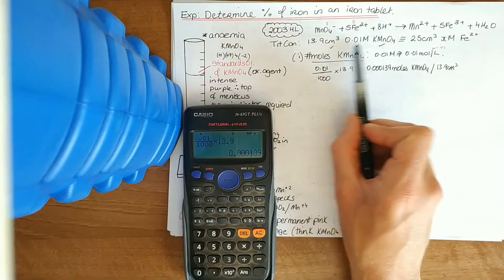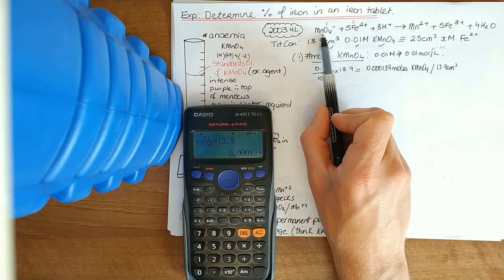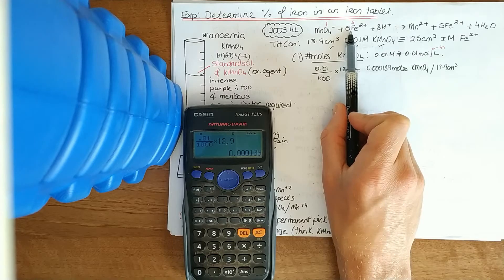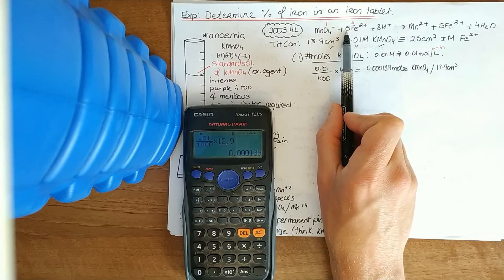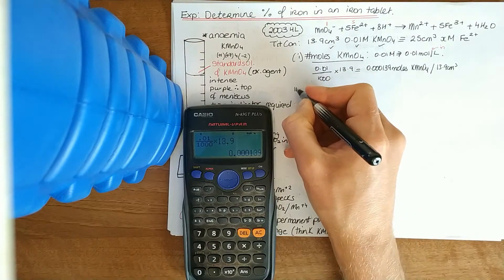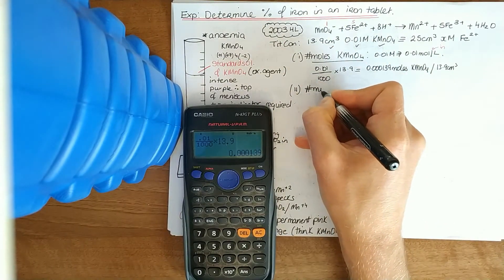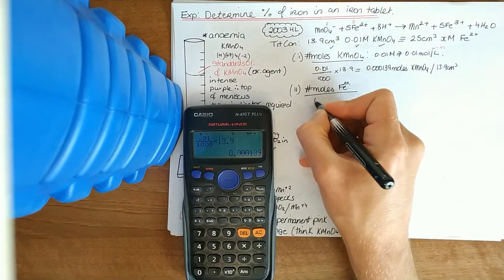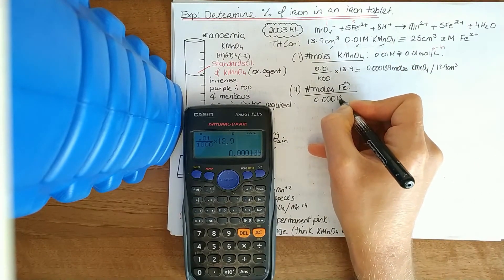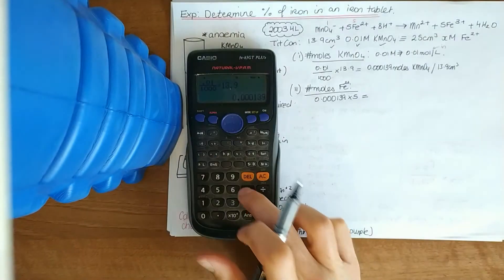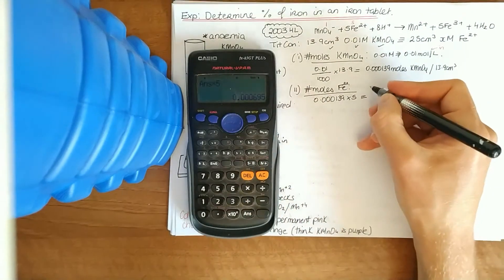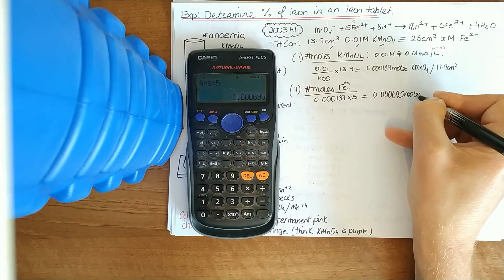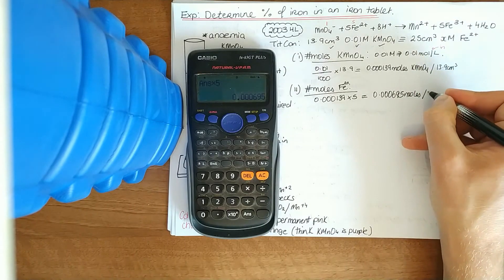We get 0.000139 moles KMnO4 per 13.9 centimetres cubed. The next thing they'll ask, we've got the number of moles of this. We know in this equation there's 0.000139 moles of this. To get the number of moles of iron, you're looking at the numbers at front. We see that it's 5 times more in iron. So we simply multiply this answer by 5.